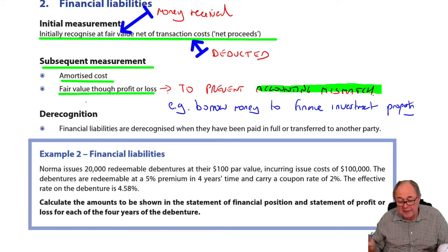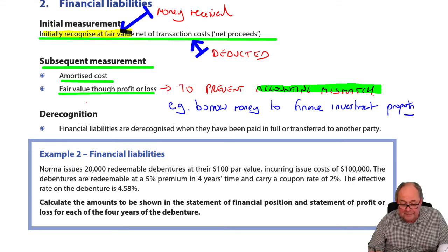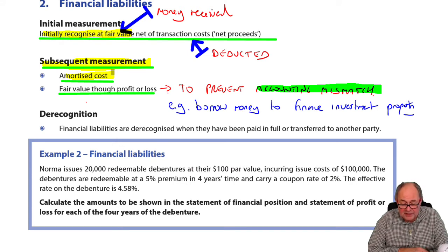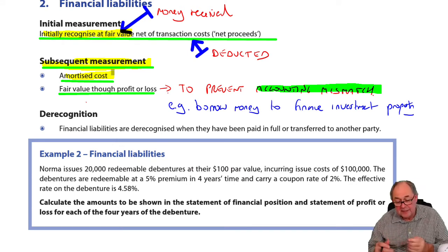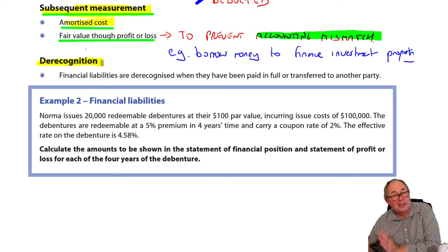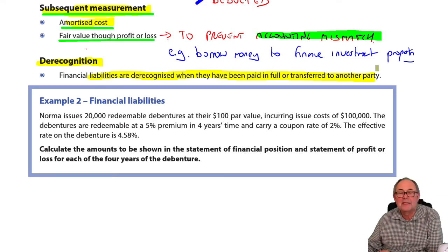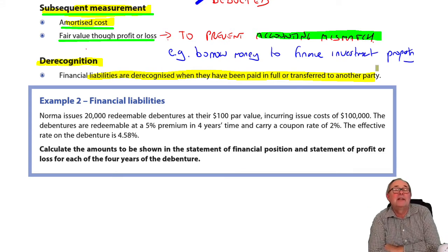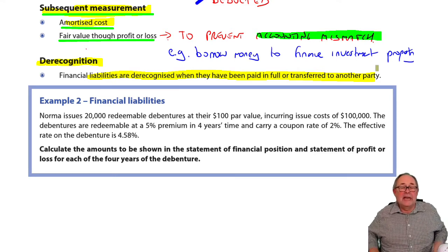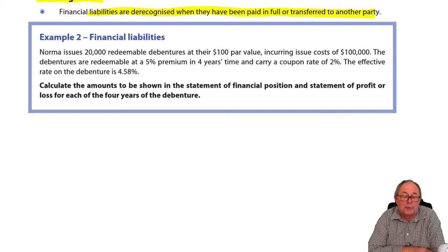But the usual treatment is that when we borrow money, the key thing is that you initially recognize it at the amount borrowed. Later on, a bit like when you lend money, you'll use amortized cost accounting. I've also put a little note in there about derecognition, but that's fairly common sense. When you've actually got rid of your liability, that is the time to derecognize it. But you'd need to make sure in practice that the risks and rewards have been transferred to another company. If you've got rid of it, you can derecognize it.